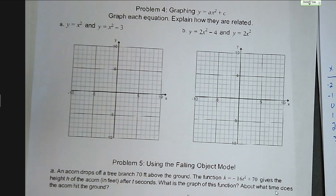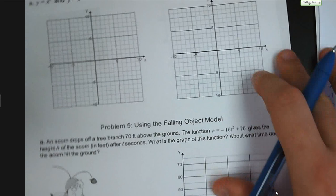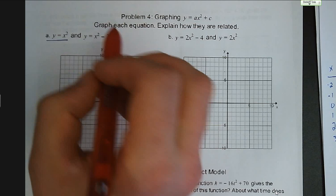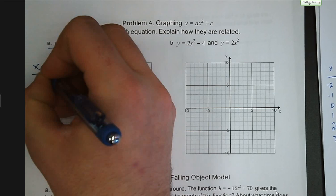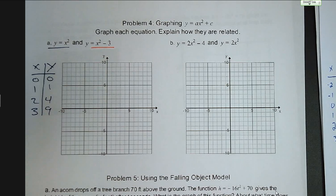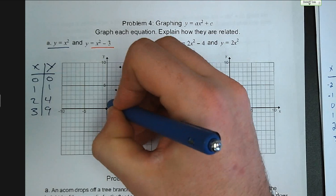Now we've got something else thrown into the mix: graph each equation and explain how they're related. We've added a c term, so we start with y equals x squared graphed in blue. Table of values: 0 squared is 0; 1 squared is 1; 2 squared is 4; 3 squared is 9. We plot 0, 0; 1, 1; 2, 4; 3, 9, and mirror to the negative side with points at negative 1, 1; negative 2, 4; and negative 3, 9.